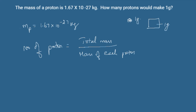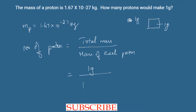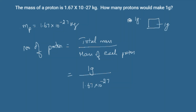So, here the total mass is going to be 1 gram, divided by mass of each proton, that is 1.67 into 10 power minus 27. It is in kilograms, so I have to convert this 1 gram into kilogram.